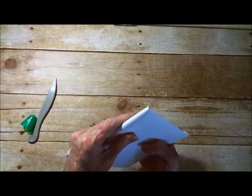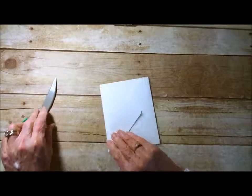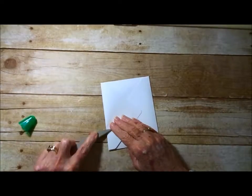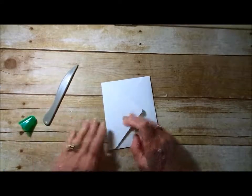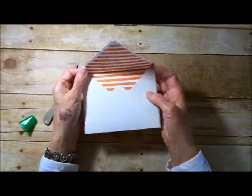Fold down on the score line again. And with your bone folder, give it a good crease. And that's all there is to it.